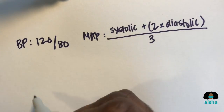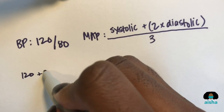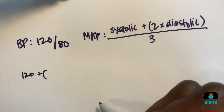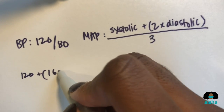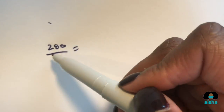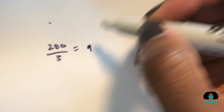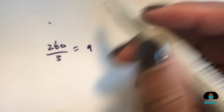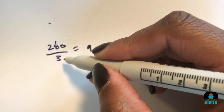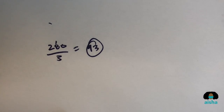Let's do it with a blood pressure of 120/80. You have your systolic, which is 120, plus two times your diastolic, which gives you 160. So 120 plus 160 is 280, divided by 3. Easy math: 28 divided by 3 goes in 9 times — 9 times 3 is 27, leaving 10, and 3 times 3 is 9, leaving 1 left over. So MAP is approximately 93.